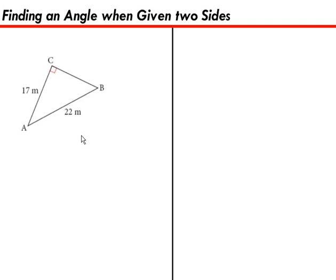However, we're only given one angle. This is a 90 degree angle, and angle A is missing as well as angle B is missing. And we're actually being asked to find the measure of angle A to the nearest tenth of a degree. So let me show you how you would do that.